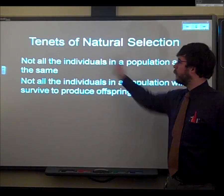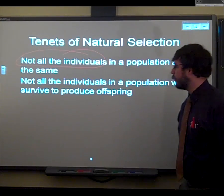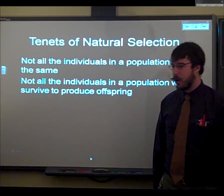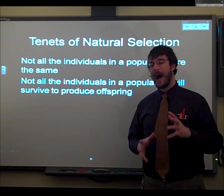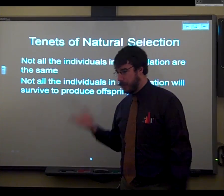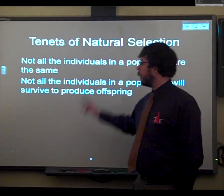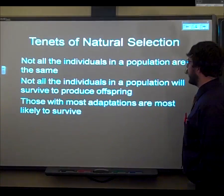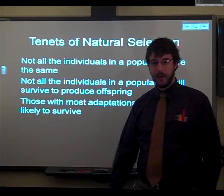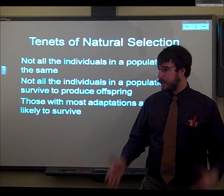The first major tenet is that not all the individuals are going to be the same, and so as a result, not all these individuals are going to be able to survive. Remember, for the good of the species, you need to be able to be making the babies. And so if not all the individuals are the same, not all of them are going to be likely to survive at all. And then you have to be able to survive long enough to make the babies.